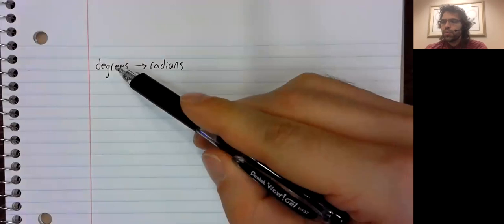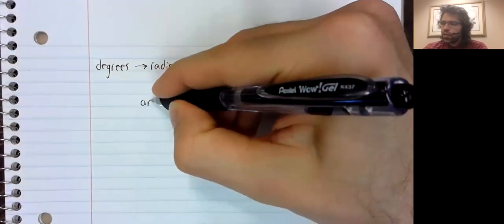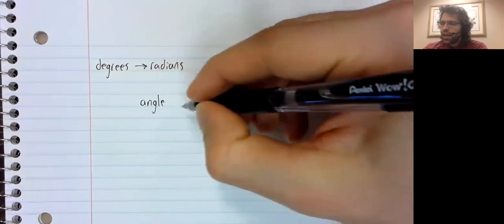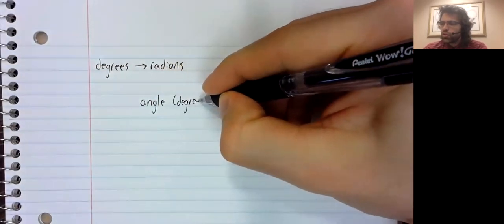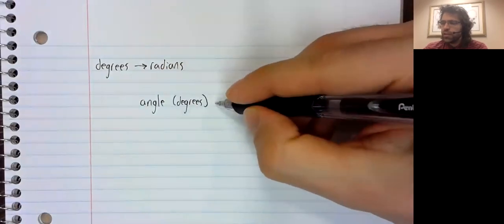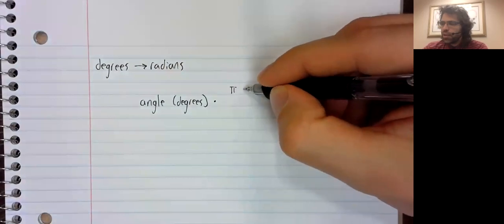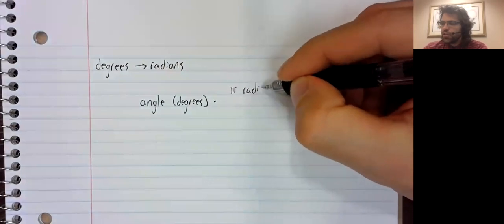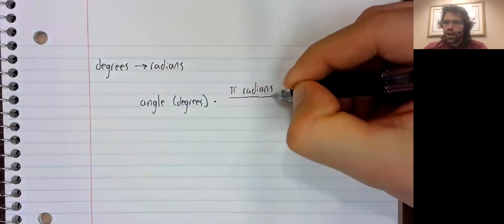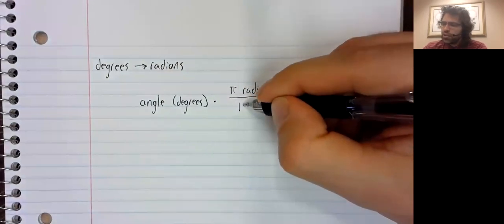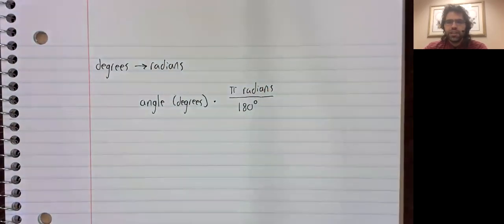To go from degrees to radians, you take the angle measured in degrees and you multiply by pi radians divided by 180 degrees.